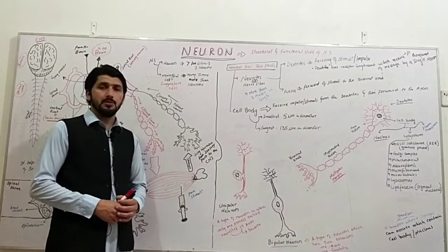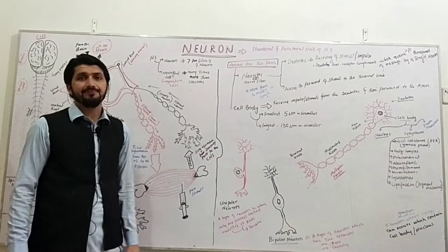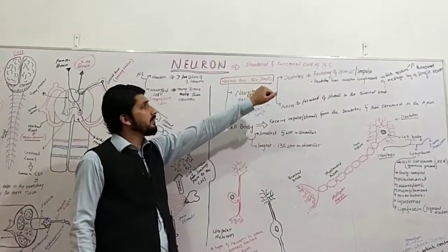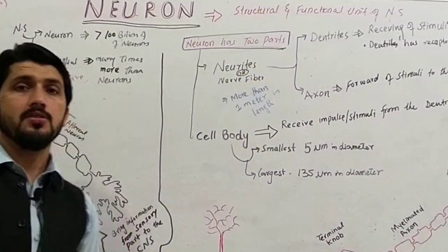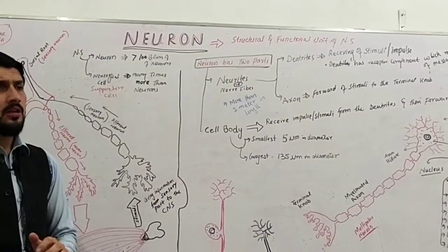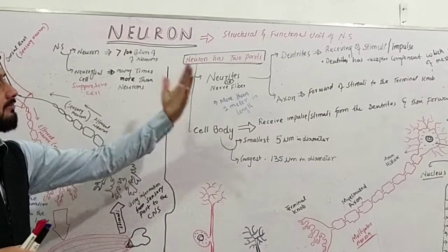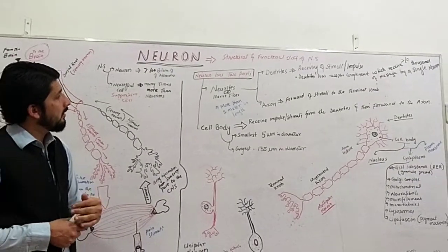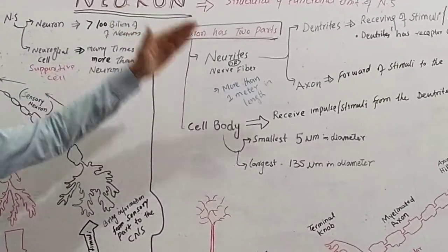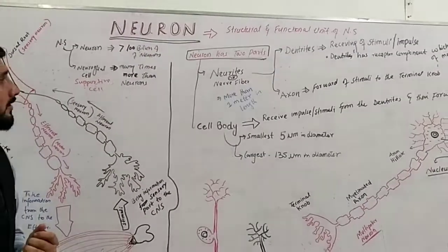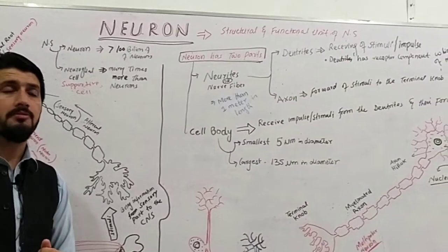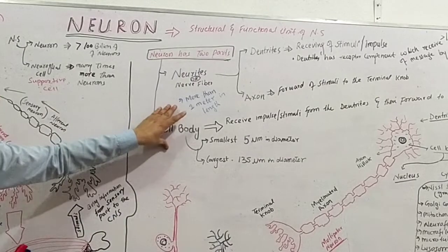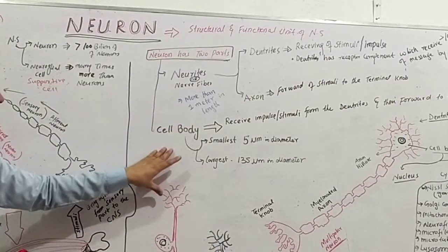Today we will discuss the neuron. A neuron is the structural and functional unit of the nervous system. Morphologically, the neuron has two parts. The first part of the neuron is called the neurite or neuropiable. The second part of the neuron is called the cell body.